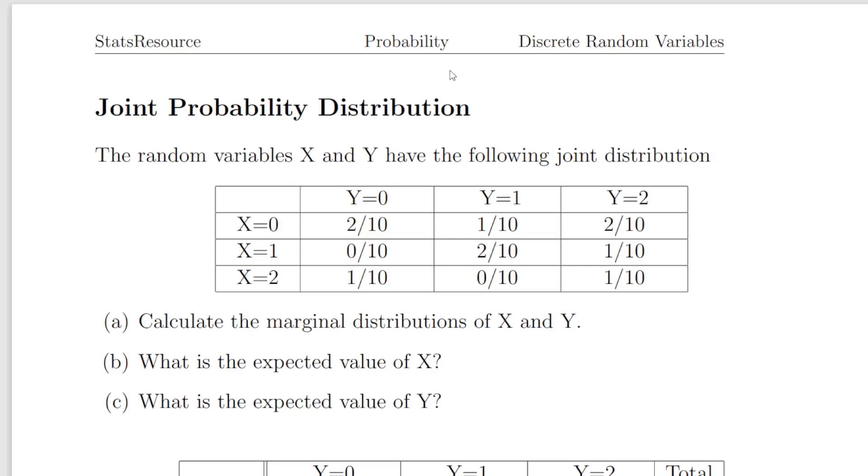We have X, which can take the values 0, 1, and 2, and also we have Y, which can take the values 0, 1, and 2 also. Now what we have here is the probabilities of each possible outcome. So we have nine possible outcomes, and what we have here is the probability of each of those nine possible outcomes.